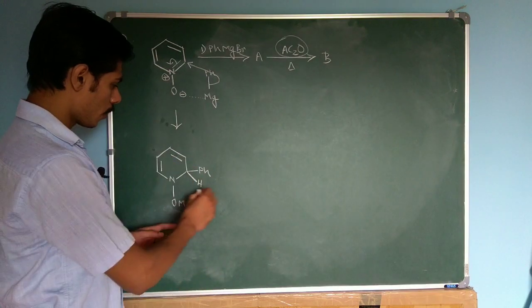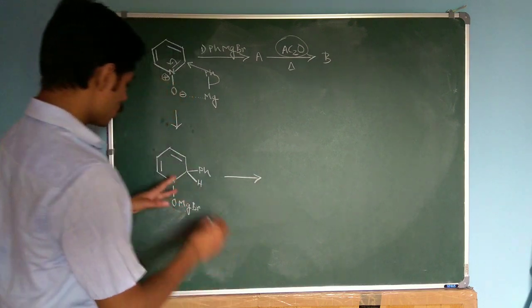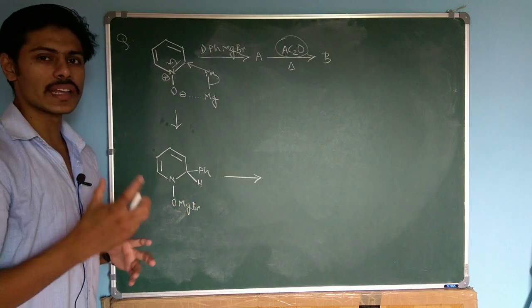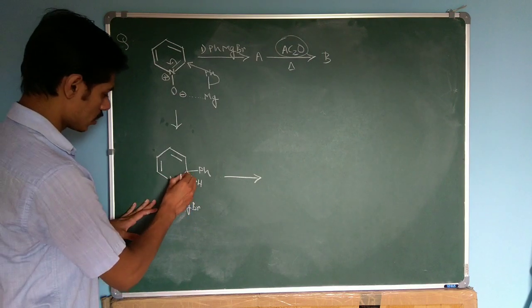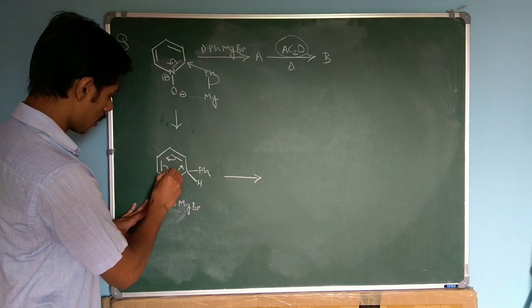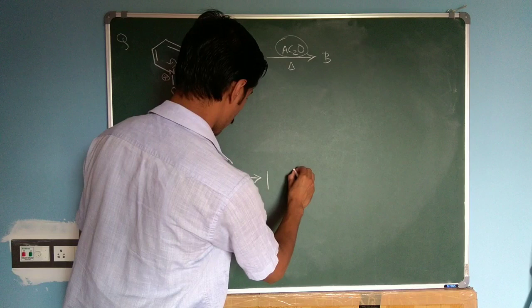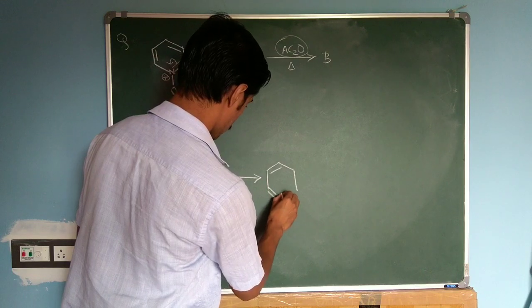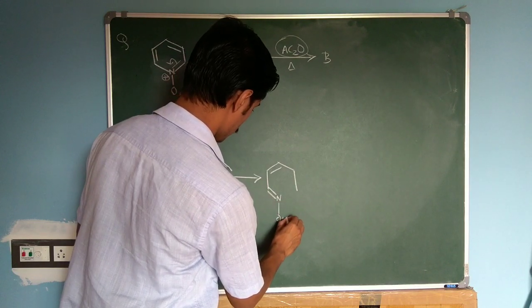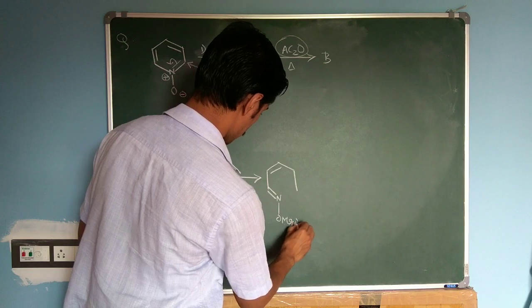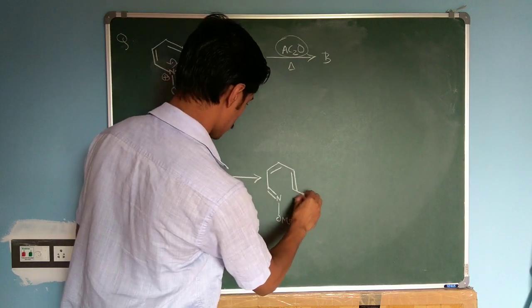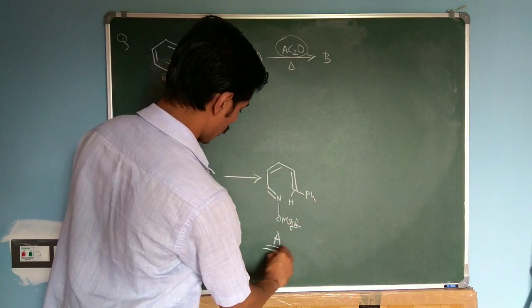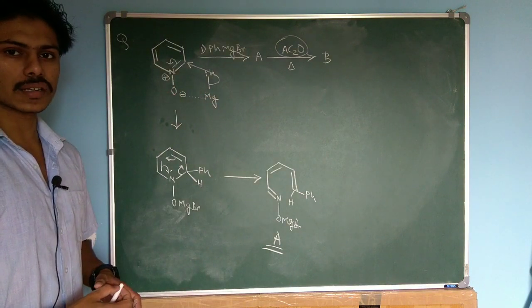So now after formation of this, you can see this is a substrate which can undergo an electrocyclic ring opening reaction. So this is how electrocyclic ring opening will occur and you will get a product with O Mg Br and here you can see this phenyl H. So this is actually your product A and this is isolated in the reaction condition.